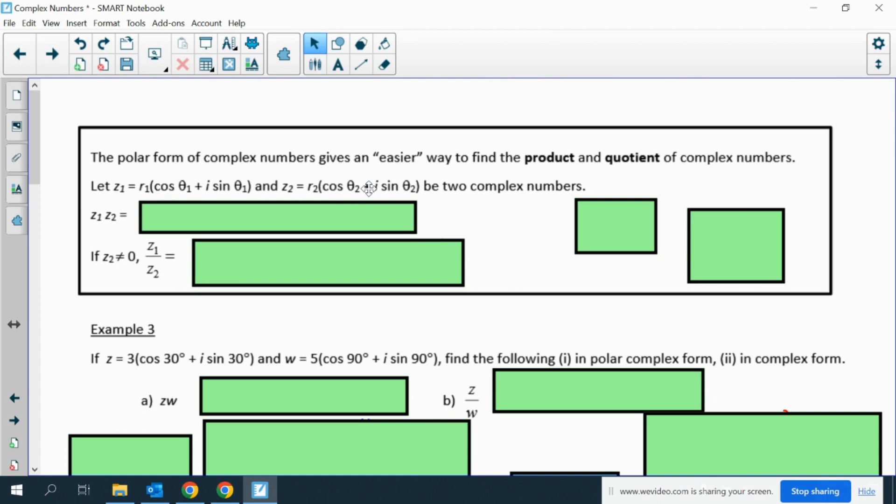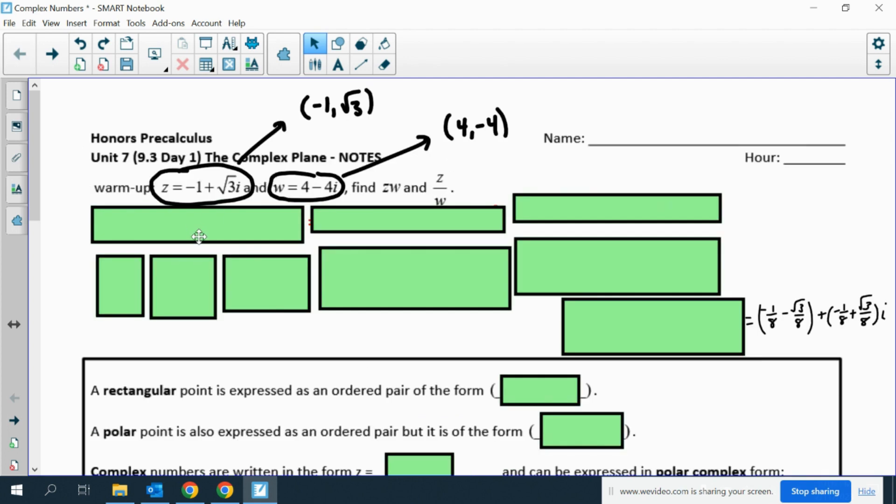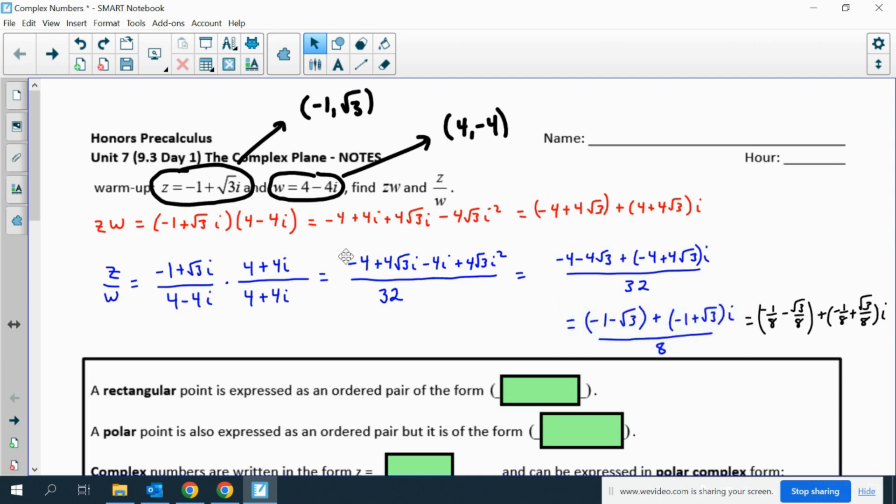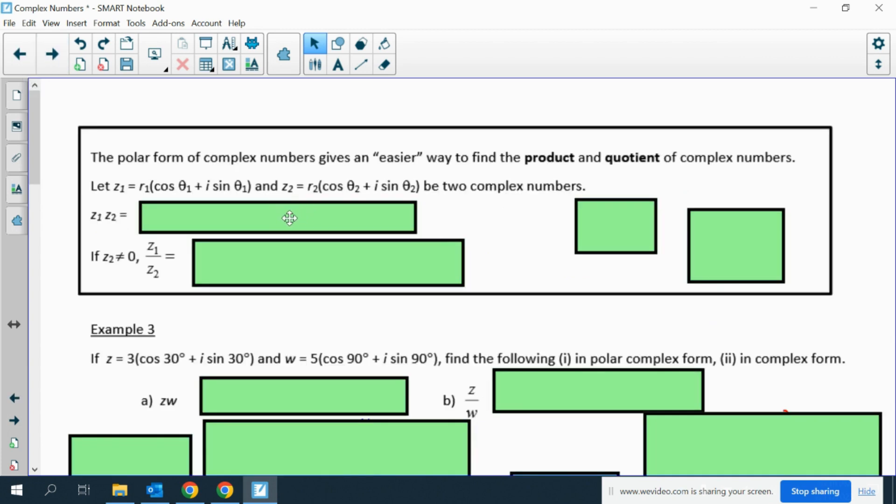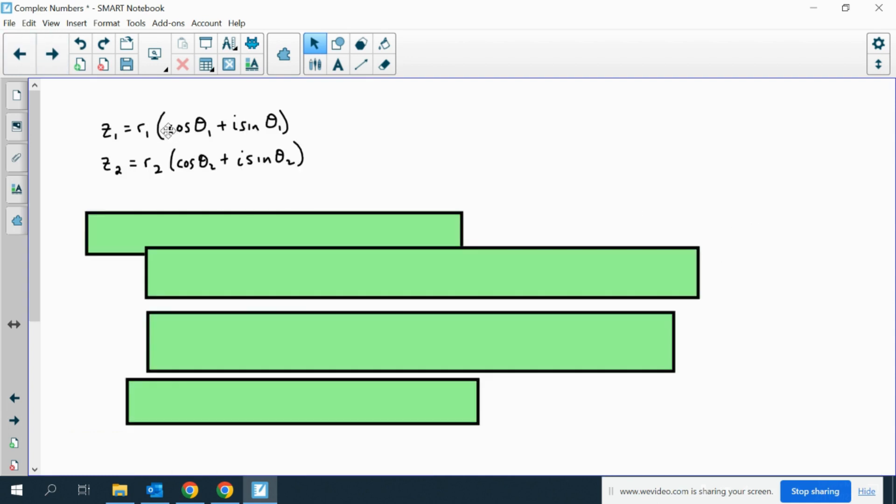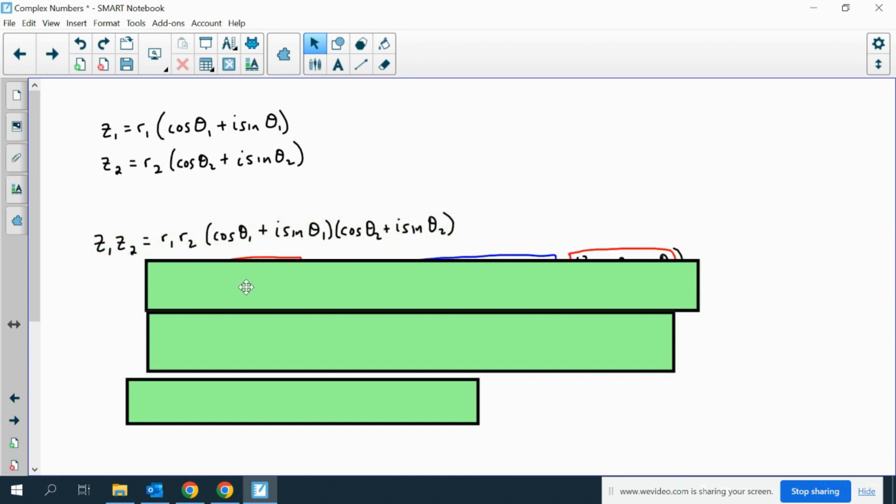The polar form of complex numbers gives an easier way to find the product and the quotient. Remember how much work all of this was with distributing and then finding the conjugate and doing all this work, multiplying by the conjugate on the top and bottom, multiplying by that fancy form of 1, the fufu. Now what we have is if we have two complex numbers, all we have to do is multiply or divide the radii and then add or subtract the angles. Now the question is, why does that work?